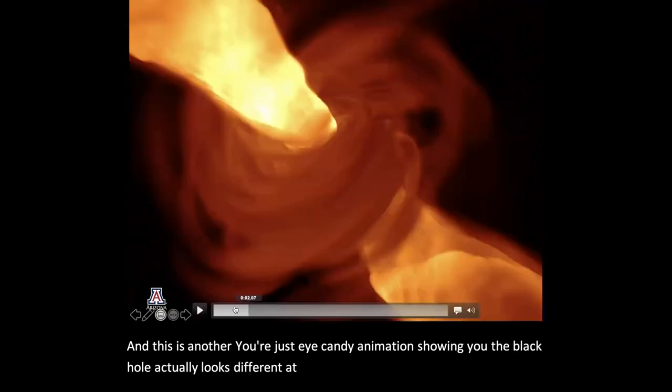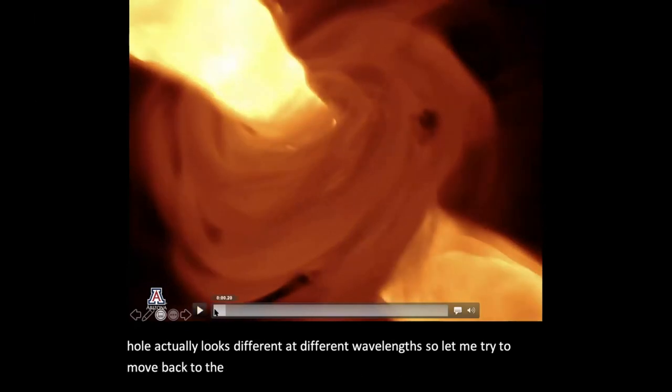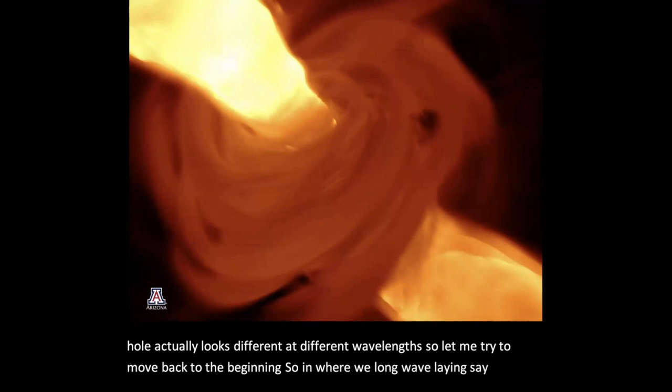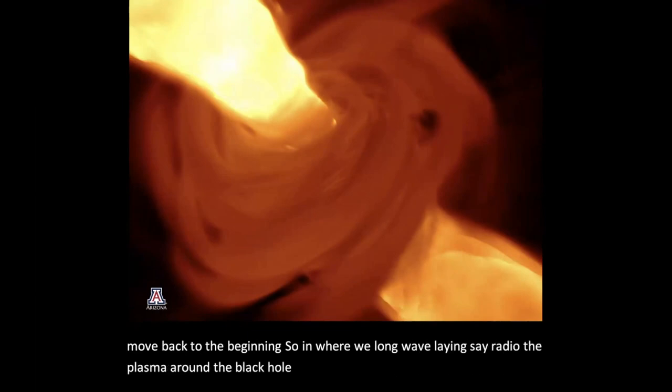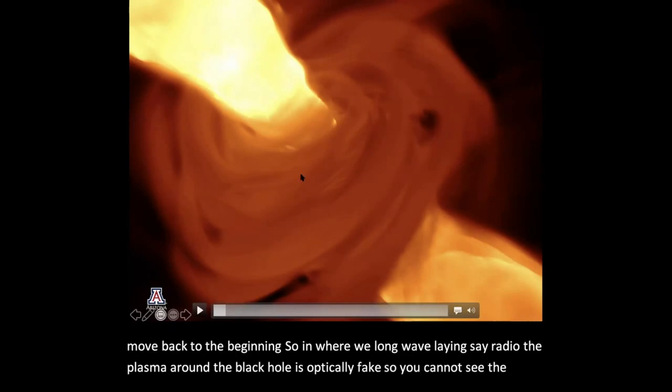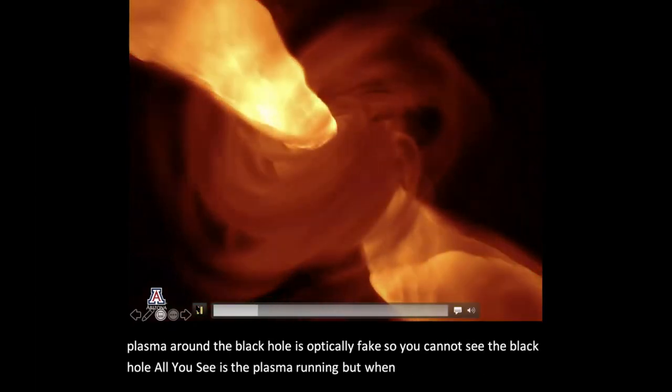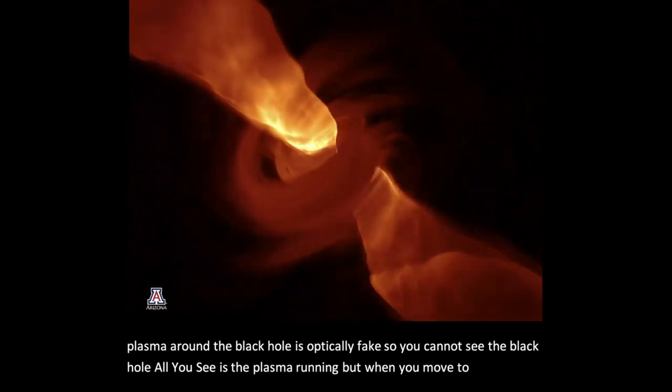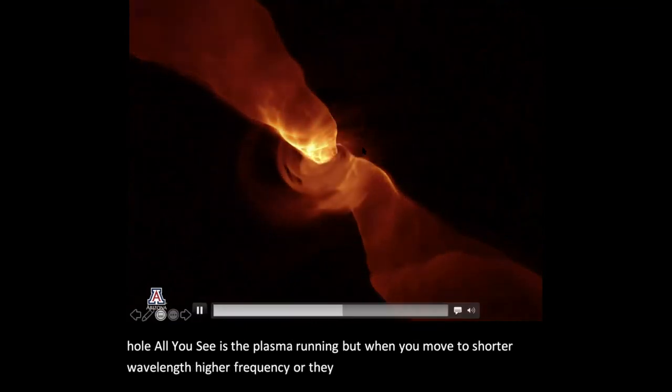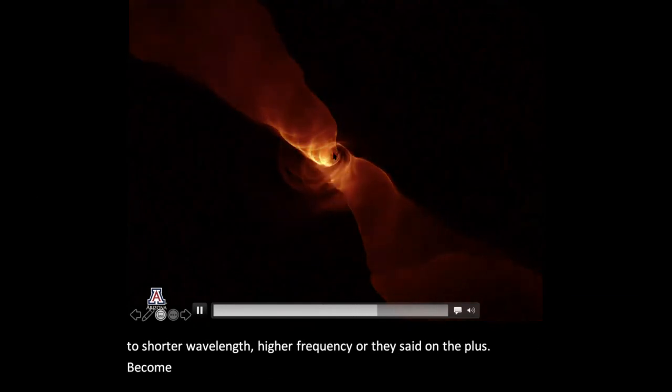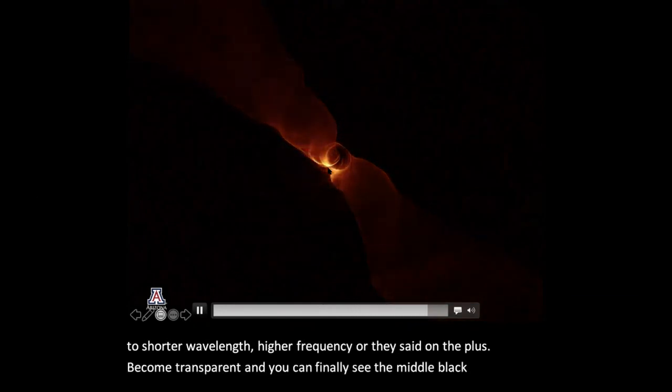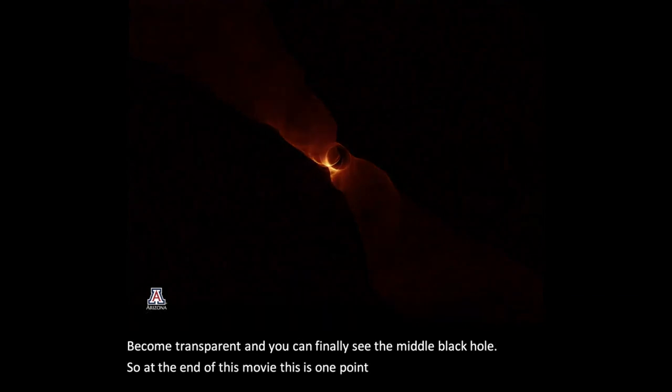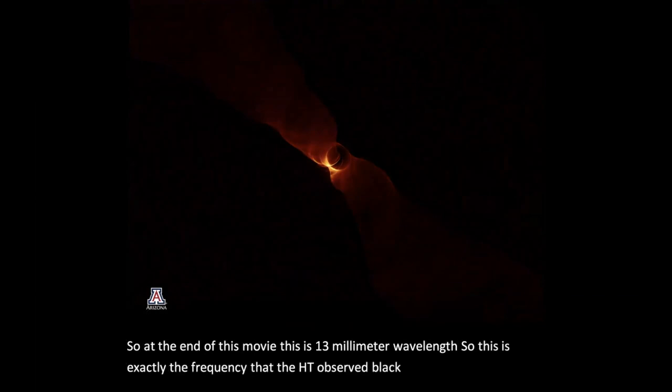And this is another eye candy animation showing you that the black hole actually looks different at different wavelengths. So let me try to move back to the beginning. So in a very long wavelength, say radio, the plasma around the black hole is optically thick. So you cannot see the black hole. All you see is the plasma around it. But when you move to a shorter wavelength, higher frequency, all of a sudden, the plasma become transparent. And you can finally see the middle black hole. Okay, so at the end of this movie, this is 1.3 millimeter wavelength. So this is exactly the frequency that the EHT observed the black hole.